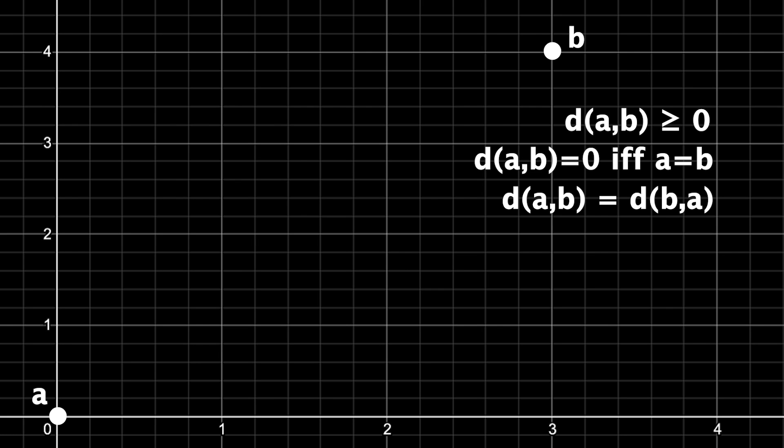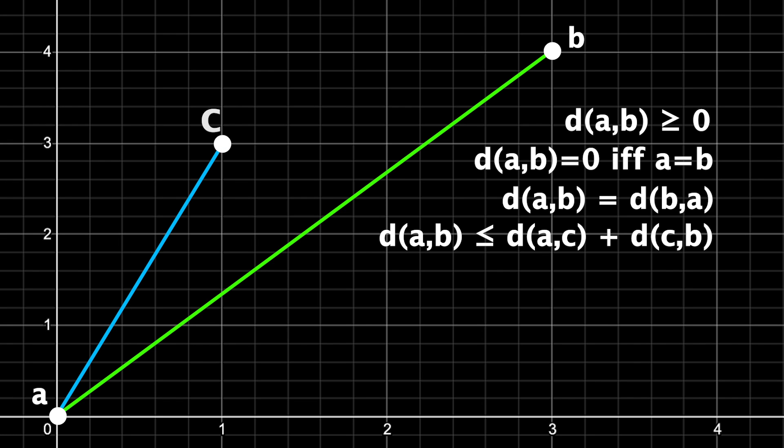Then lastly, this one is important. The distance from A to B must be less than or equal to the distance from A to some random point C plus the distance from that point C to B. This is obvious with Euclidean distance. The distance from A to B here is going to be less than or equal to the distance from A to some other point C plus the distance from C to B. Now you can also see why this is called the triangle inequality. Essentially it says taking a detour must increase the distance or keep it the same. If C were to be on that line segment, then the distance would not change. But it definitely can't go down.